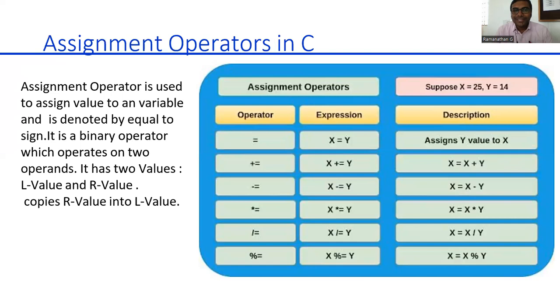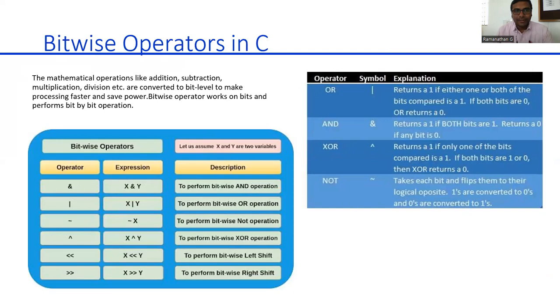Assignment operator. We are assigning some value to the variable. Variable is nothing but internally we are storing the value in the memory location. Through the variable, we are trying to fetch the data. Operators: equal to, plus equal to, minus equal to. This is assignment operator. X plus equal to Y or X equal to X plus Y.